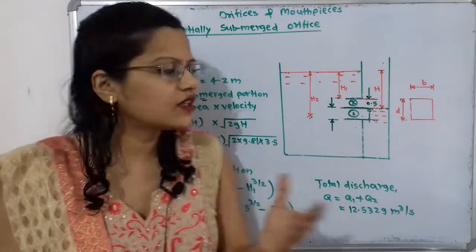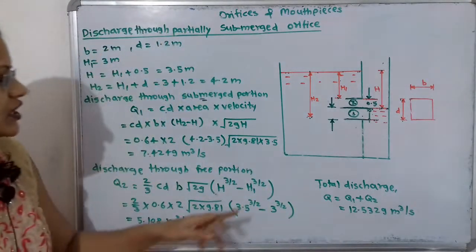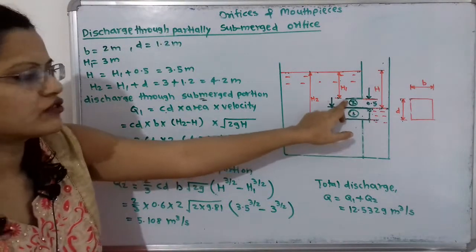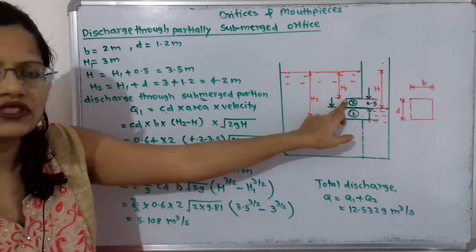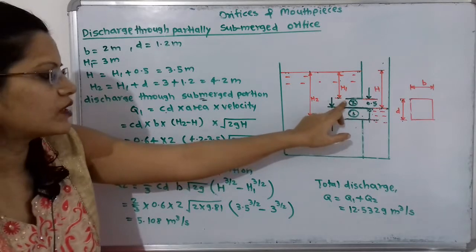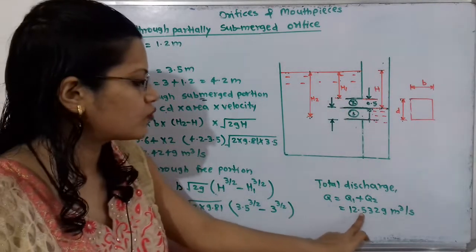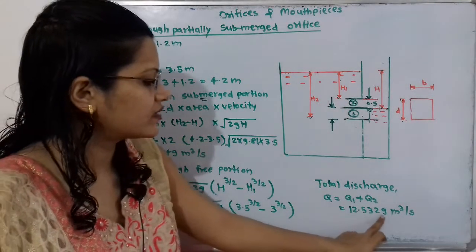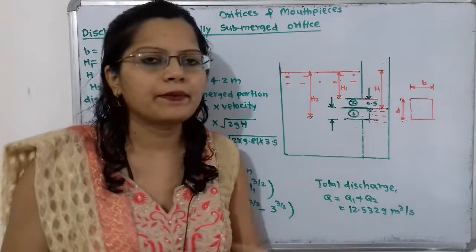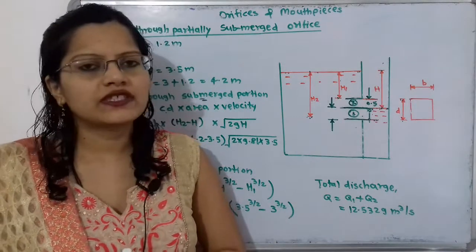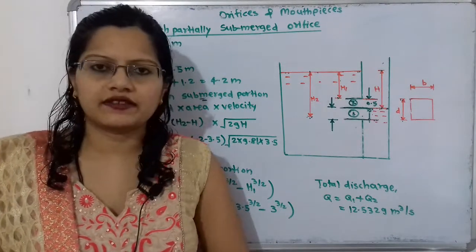The total discharge is the sum of both parts: Q = Q1 + Q2 = 7.4249 + 5.108 = 12.5329 m³/s. This is the final answer.